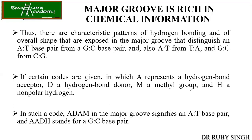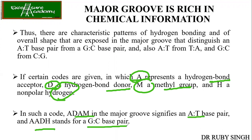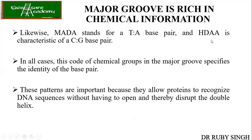The codes are: hydrogen bond acceptor = A, donor = D, methyl group = M, and no group = H. ADAM in the major groove means A-T base pairing; AADH means G-C; if H, D, A, A is present, it is C-G base pairing; and MADA means T-A. So whenever the code is given, you can identify what kind of base pairing is present.